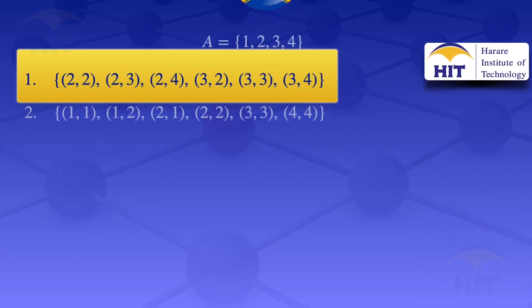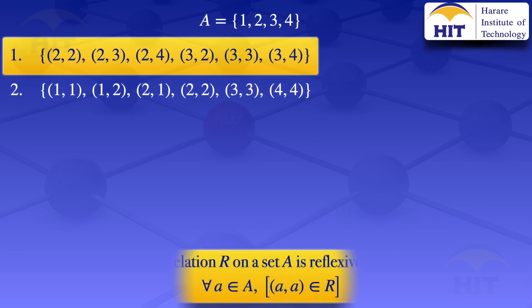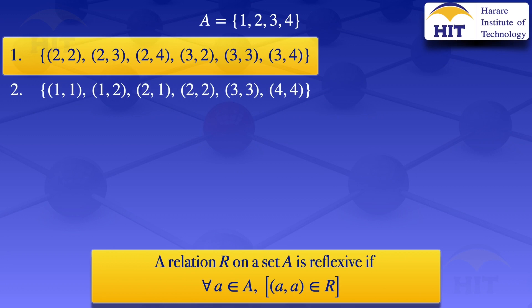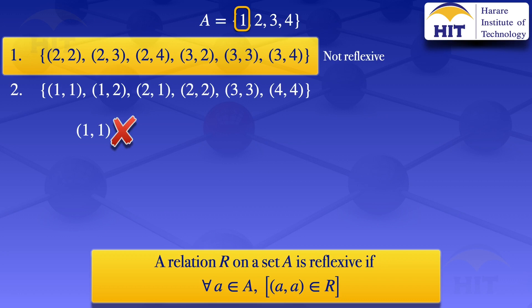I'll start by looking at the first relation and check if it is reflexive. By definition, a relation R on a set A is reflexive if for all a in A, the ordered pair (a,a) is in the relation. Looking at element 1 in A, we check if (1,1) is in the relation. We don't have (1,1) in that relation, so the reflexive condition is violated. We conclude that this relation is not reflexive.